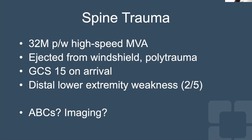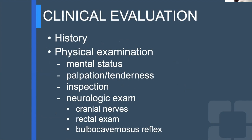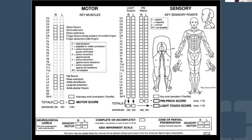To summarize the case: ejected from windshield, polytrauma, GCS 15 on arrival, distal lower extremity weakness 2/5. Airway, breathing, and circulation are stabilized. He gets a pan-scan — basically a full-body CT: chest, abdomen, everything. This means literally having 10 people pushing the patient to CT, the scanner runs them through, and the on-call radiologist gives a quick read. Big actionable findings are generally caught during this pan-CT.